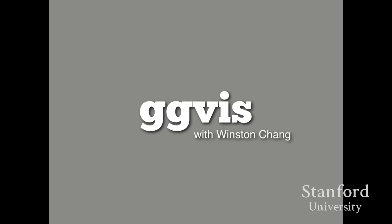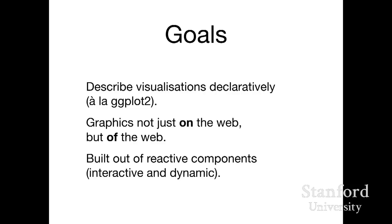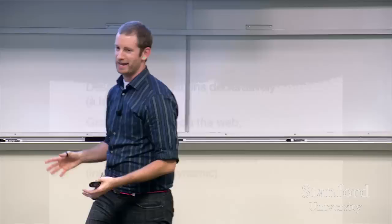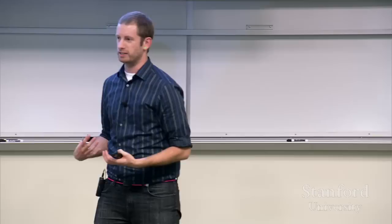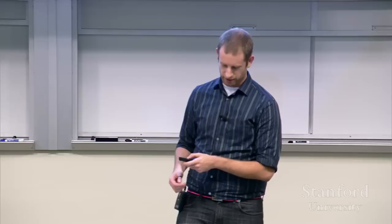The other project I want to talk about is ggvis — joint work with Winston Chang — tackling the visualization problem and aimed squarely in the cognitive space. The three goals of ggvis: first, describe visualizations declaratively like you do in ggplot2; second, graphics should be of the web — fundamentally web graphics, HTML, CSS, JavaScript, so you can show a fantastic visualization to your boss on their iPad; and third, it's built out of reactive components in the sense of functional reactive programming, allowing a declarative specification of interactive and dynamic behavior.